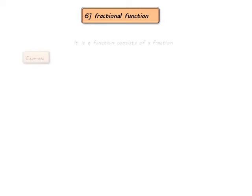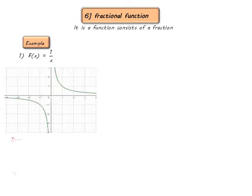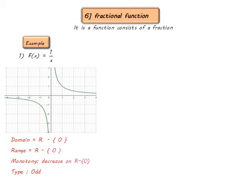The fractional function is written in fractional form, like f(x) = 1/x. The point of symmetry of this function equals (0, 0), so the domain is ℝ except 0, and the range is ℝ except 0. The function decreases on ℝ except 0, and the function is an odd function.